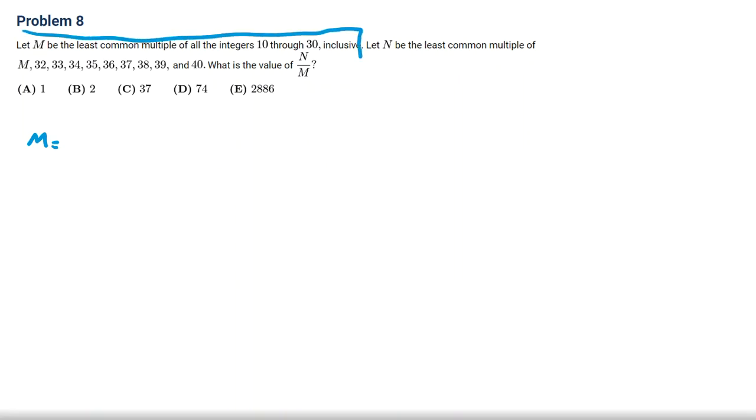From this part, it says LCM of 10 through 30. LCM of 10, 11, 12, and so on. We know that M, the LCM, is each prime to the power of maximum number. For example, because we have 16 here, 2 to the power of 4. We don't have 2 to the power of 5 because we need 32. Times 3 to the power of what? 3 cubed because 27 we have. The definition of LCM is this. Each prime to the power of maximum one. You should prime factorize all of them and for each prime, you should find maximum power.